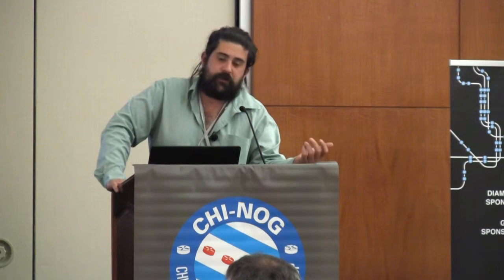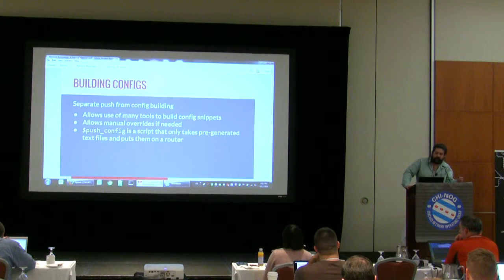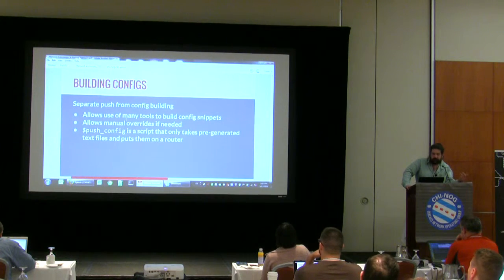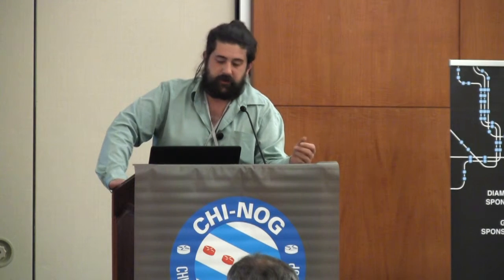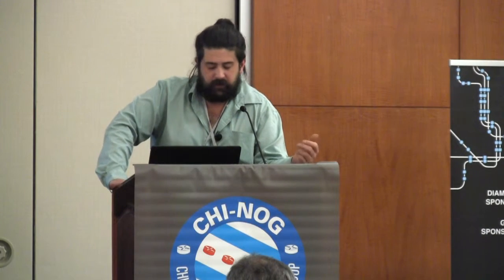You can then use any tool you want. You can do a one-off — PeeringDB is a good example — you can have one script that when you peer, goes to get the max prefix list from PeeringDB. You can also just do manual config files. There are lots of cases when you start automating a network where you run into an area that isn't easy to automate — instead of fighting that, just do a manual one-off. When it comes to deployment, push config is one little script that takes a text file and puts it on a device — Cisco, Juniper, Arista, anything.